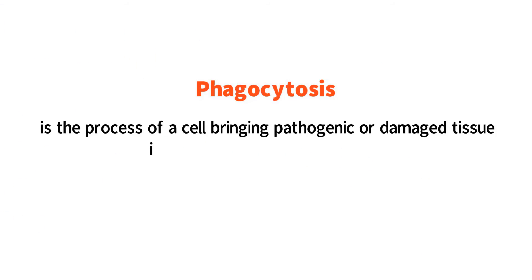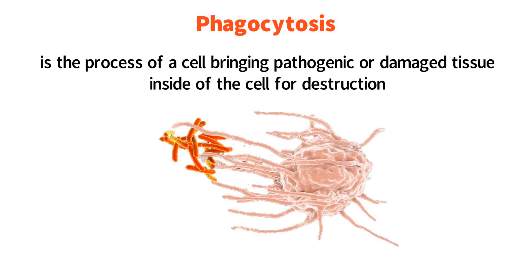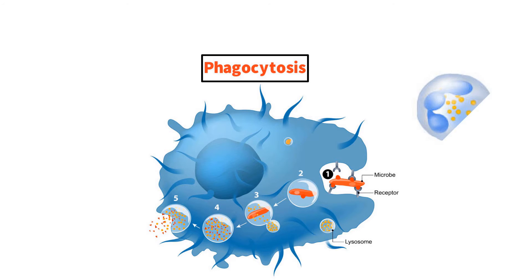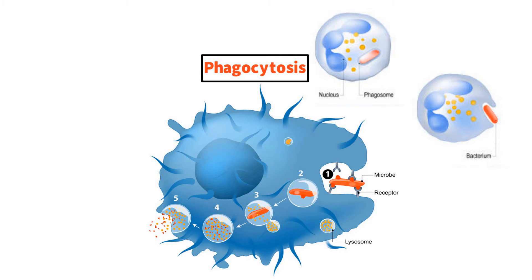Phagocytosis is the process of a cell bringing pathogenic or damaged tissue inside of the cell for destruction. The phagocytic cell uses its cell membrane to surround the material being ingested, then internalizes the portion of the membrane surrounding the material and breaks it off. The broken-off piece of membrane acts like an envelope surrounding the engulfed material. When material is brought into a cell through phagocytosis, the engulfed material is contained in this newly broken-off portion of the phagocytic cell's membrane, known as the phagosome.